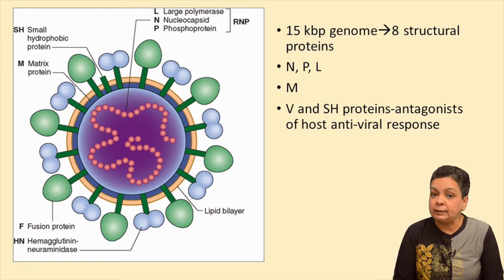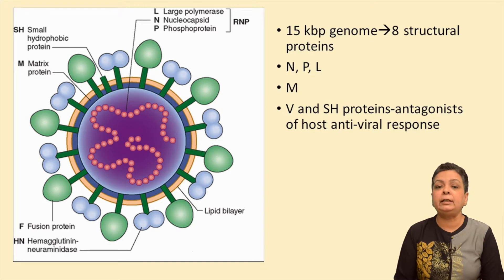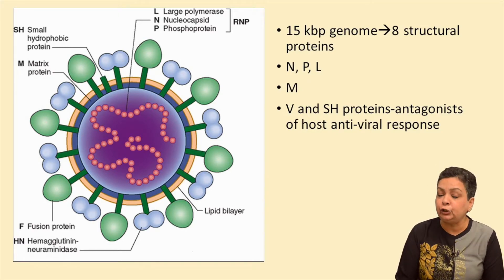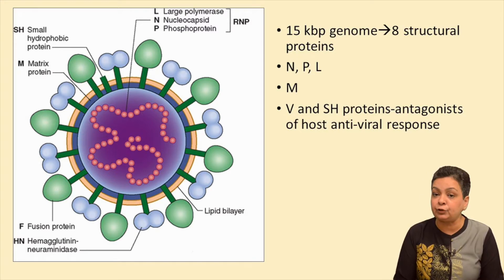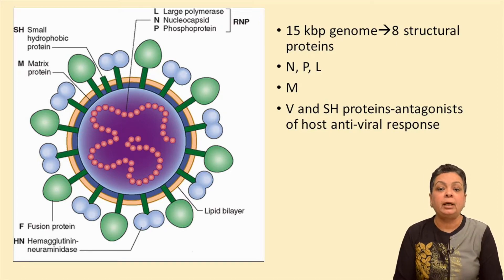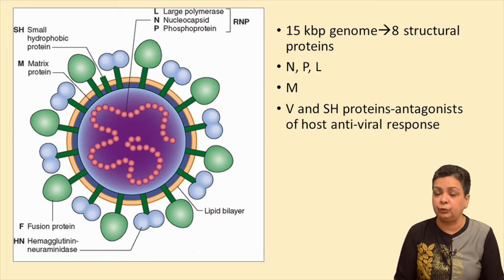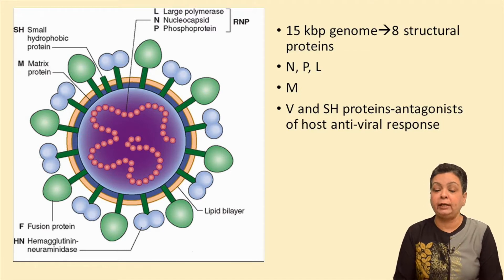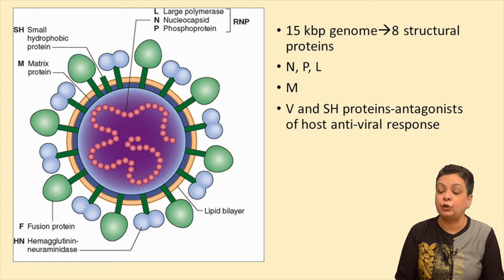Mumps virus is an enveloped virus like all Paramyxoviridae viruses, having a helical nucleocapsid and a single-stranded negative-stranded RNA genome. This 15 kb genome encodes 8 structural proteins. The N, P and L proteins are the ones associated with the RNA genome. N is the nucleocapsid, L is the large polymerase gene, and P is the phosphoprotein.